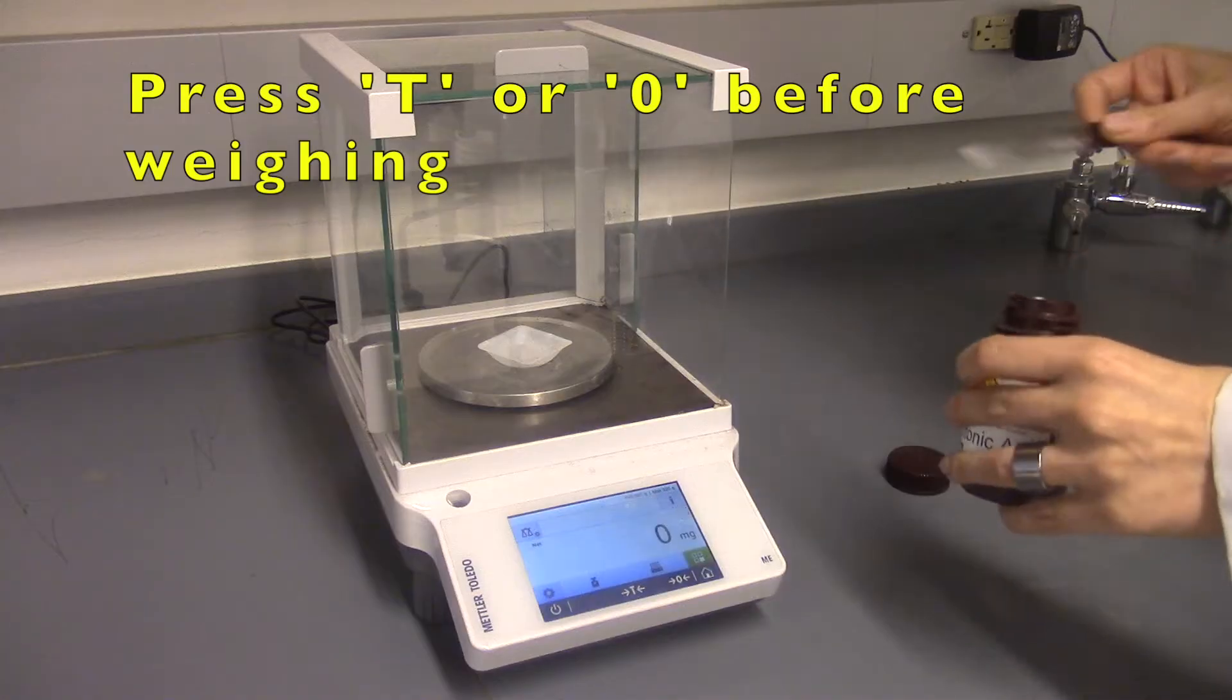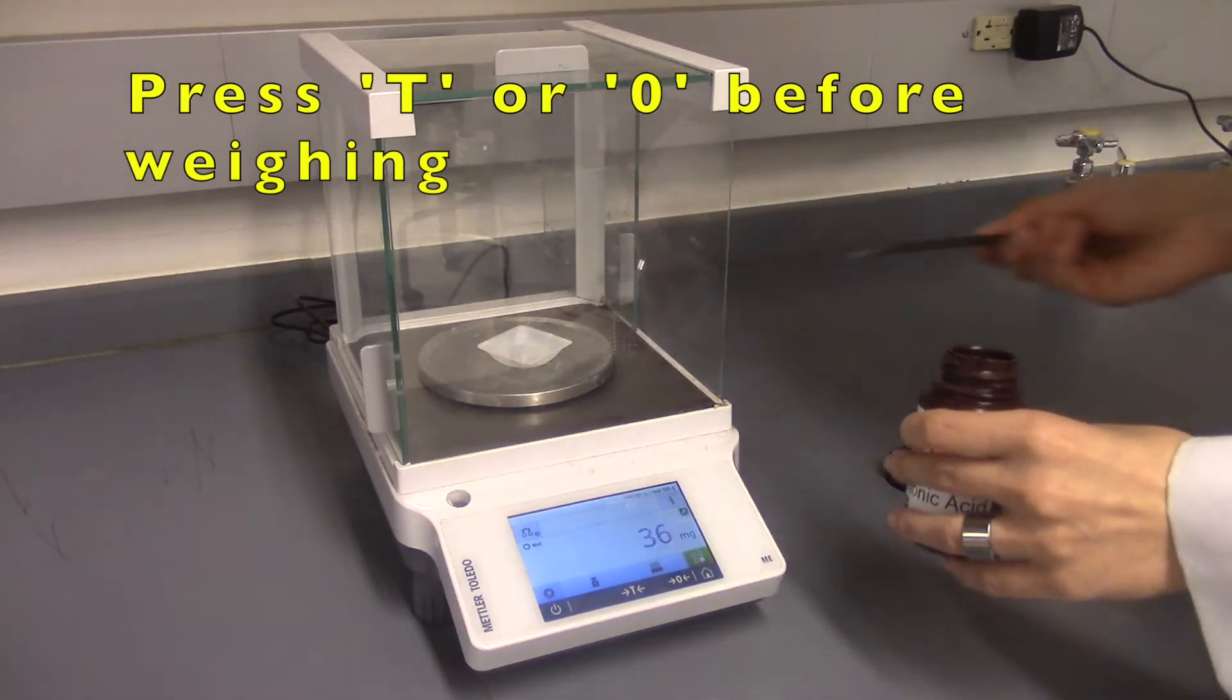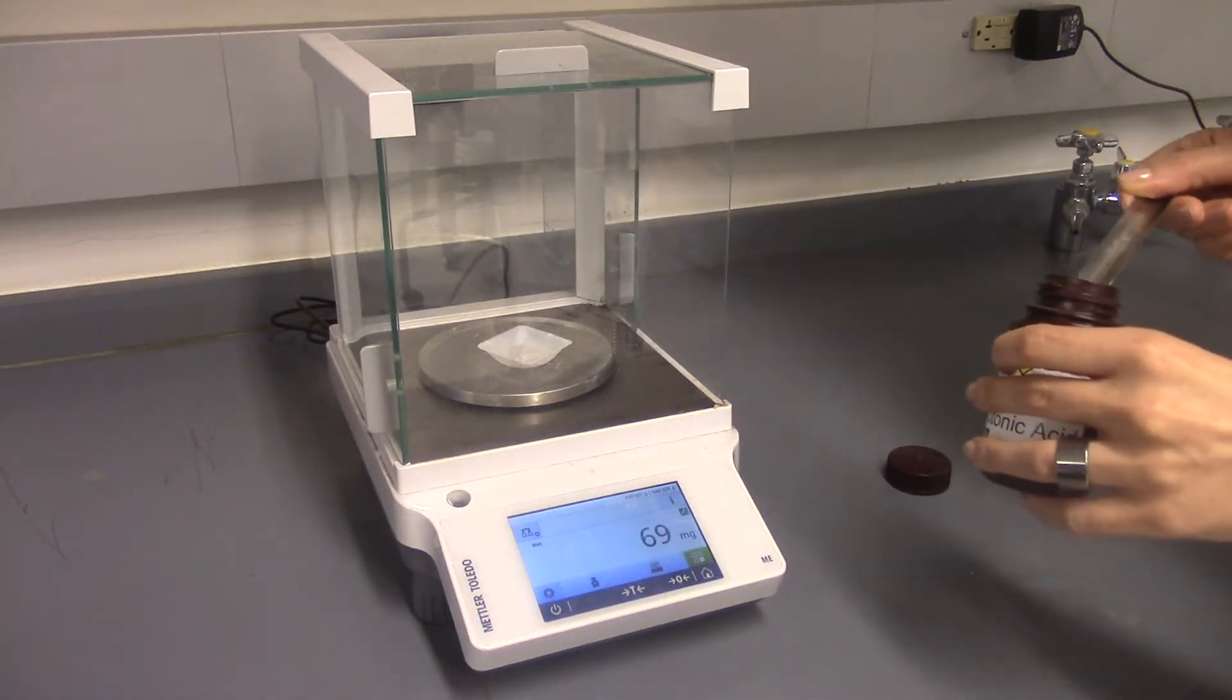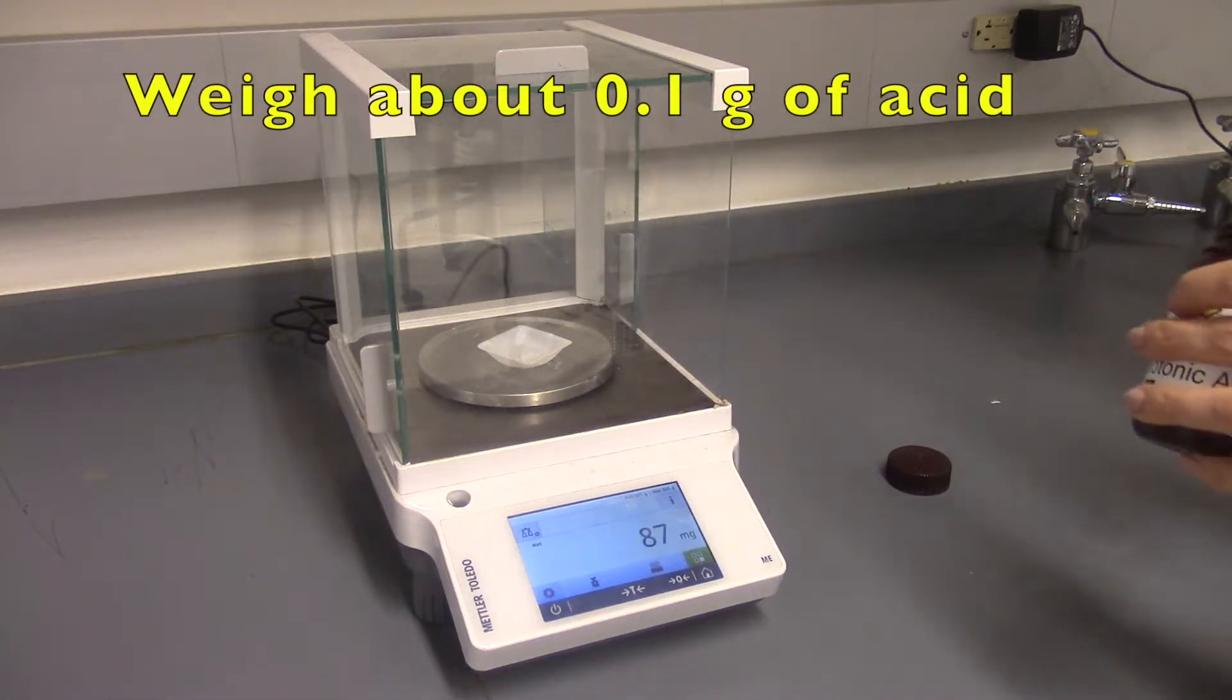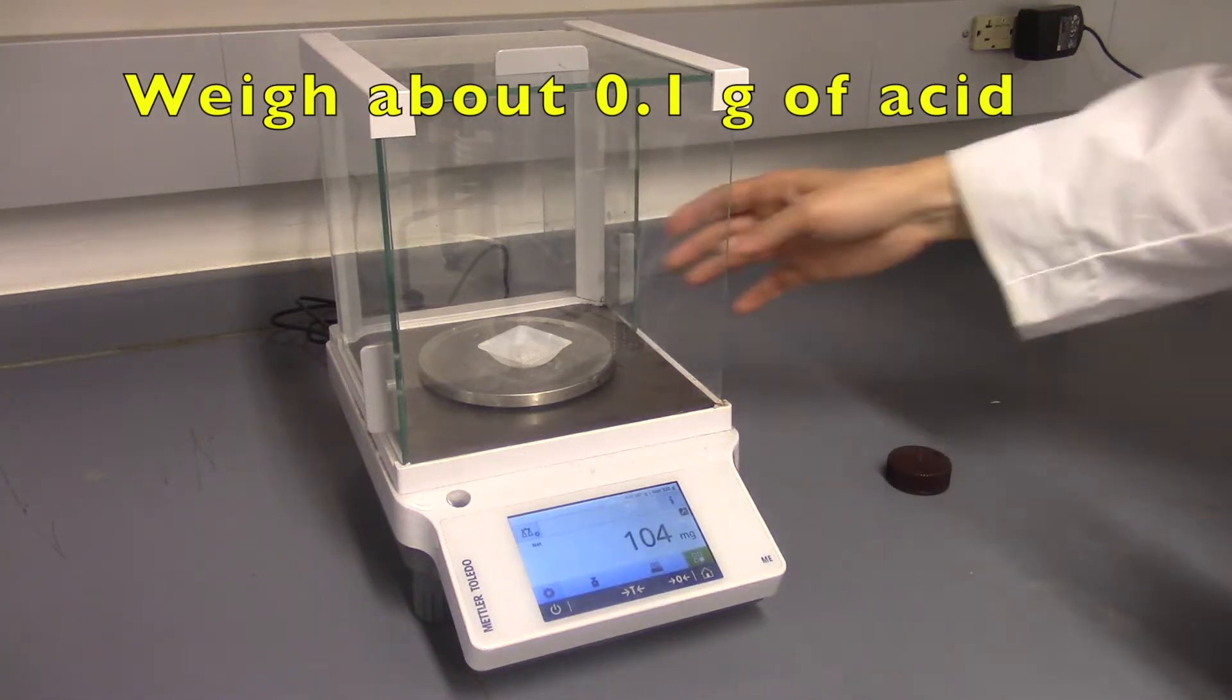Make sure to zero out the weigh board before you weigh any solid. Weigh about 100 mg of the acid. The exact amount is not important but you must record the mass accurately. Slide the door closed before recording the mass.